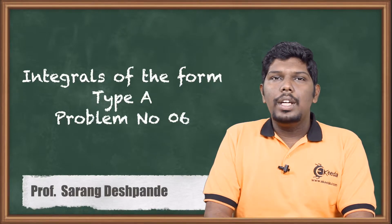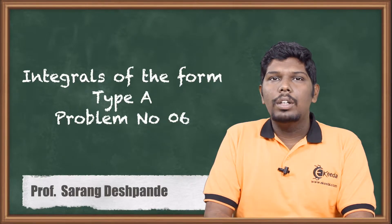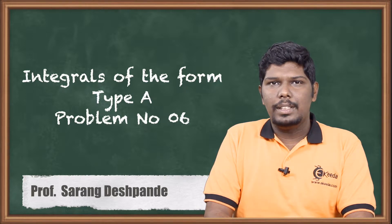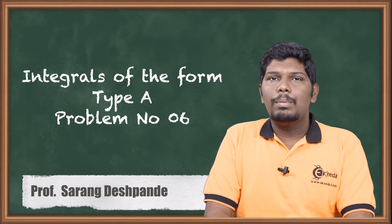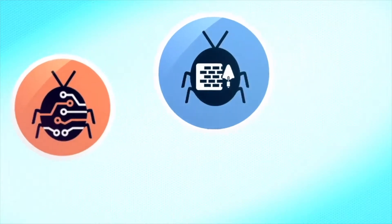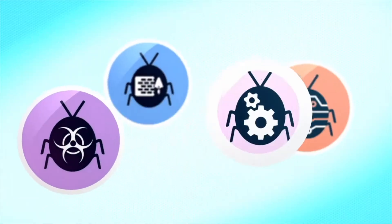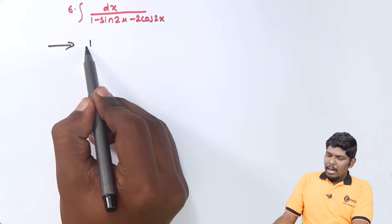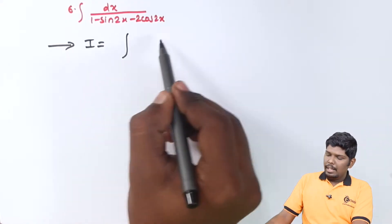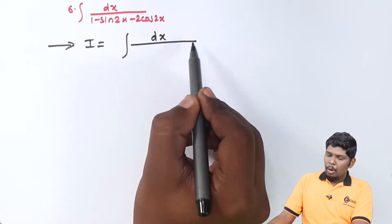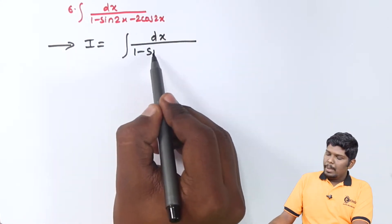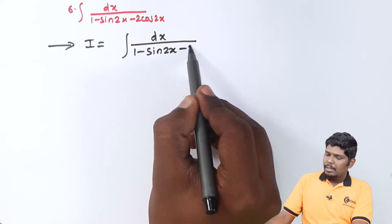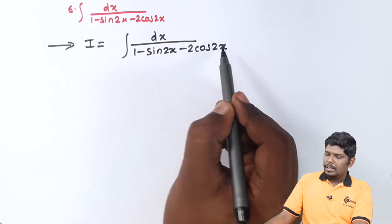in this video we are going to see a problem based on the integral of 1 upon (a·sin2x + b·cos2x + c). Let us start with problem number 6. I is given as the integral of dx upon (1 minus sin2x minus 2·cos2x).